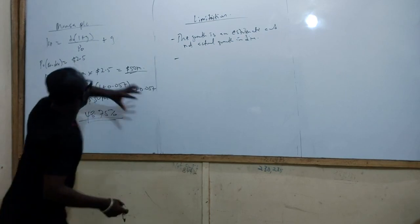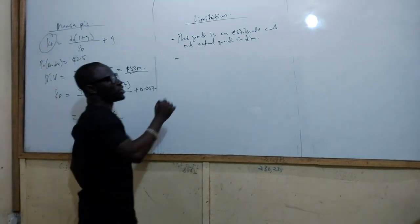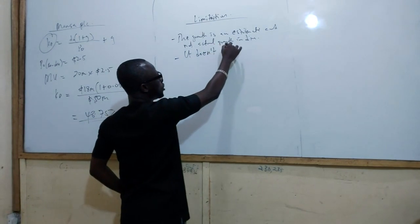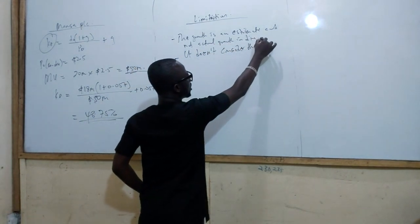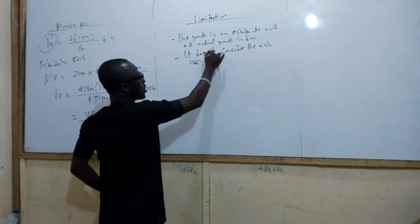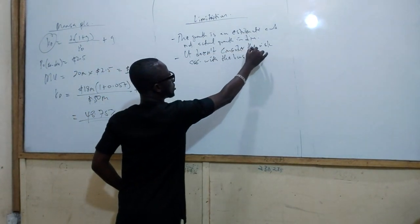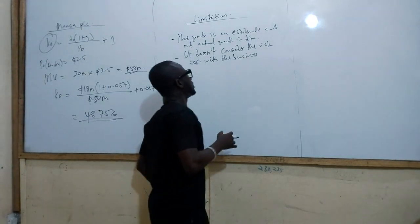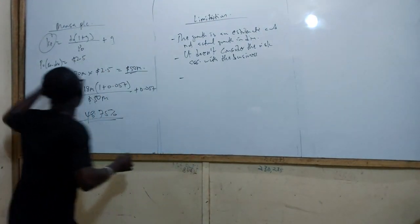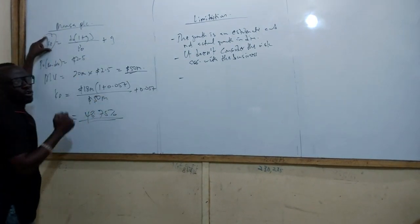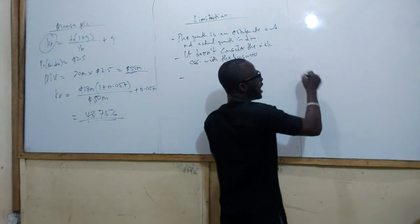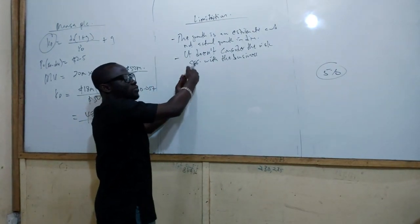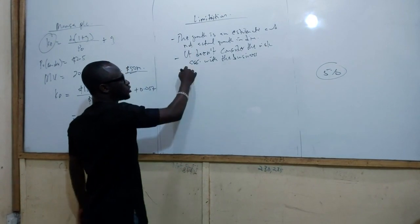Number two: using the dividend to calculate KE does not take into consideration the risks associated with the business. Number three: the model assumes a constant growth in dividend — meaning every year there will be a fixed percentage growth — but in actual practice, dividends do not grow at a constant rate.